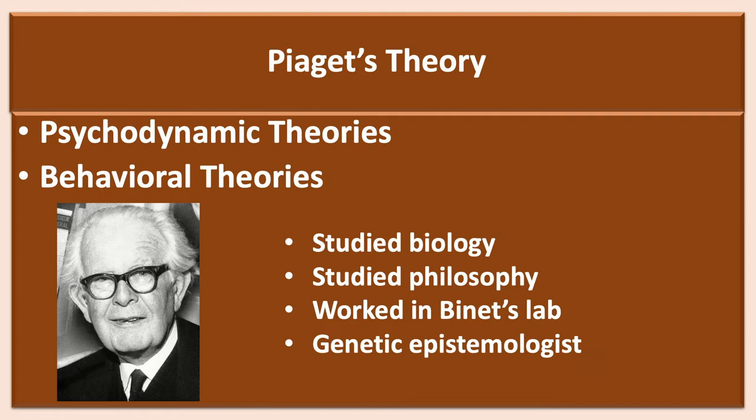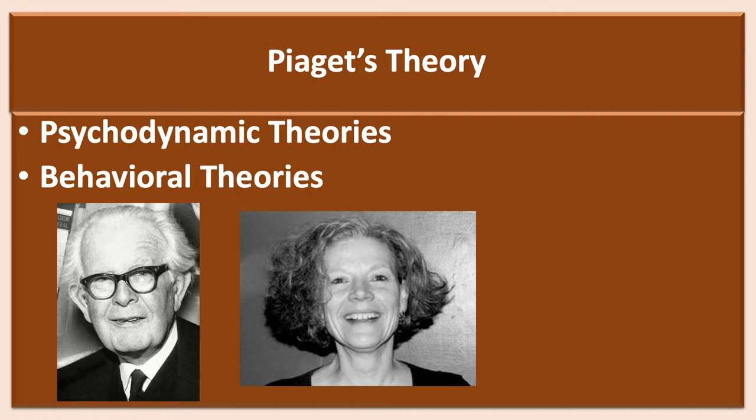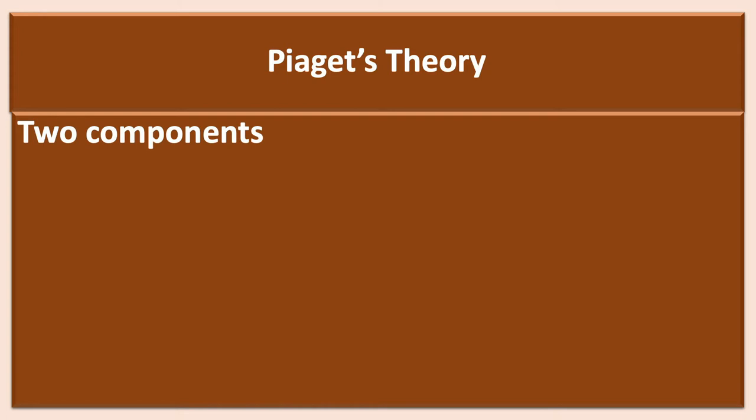Piaget became interested in why children of a certain age answered questions incorrectly, but in the same way. His work in biology, philosophy, psychology, and sociology led to the development of his theory of cognitive development, which he labeled genetic epistemology, as he was interested in how biology impacts how human beings come to know themselves and the world around them. In 1943, Piaget supervised Bärbel Inhelder's PhD dissertation, and they collaborated on the development of the theory until his death in 1980.